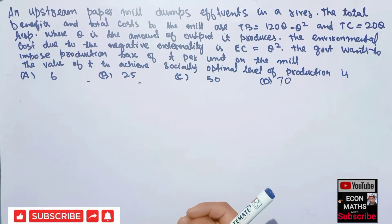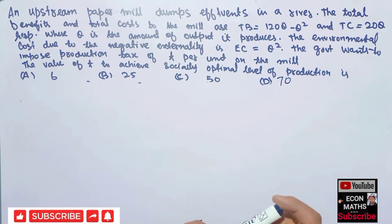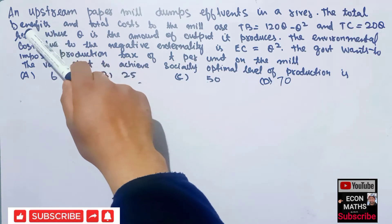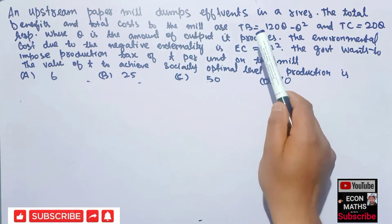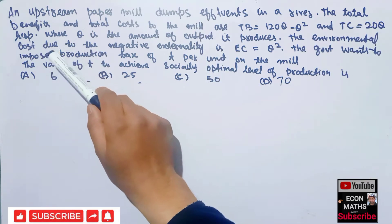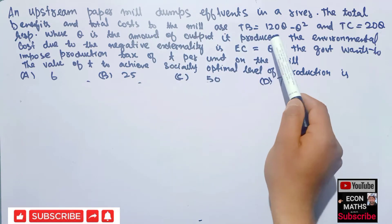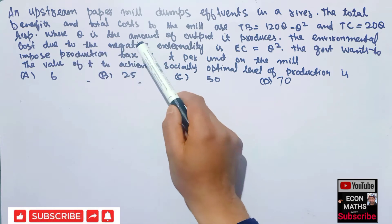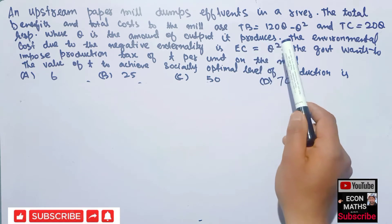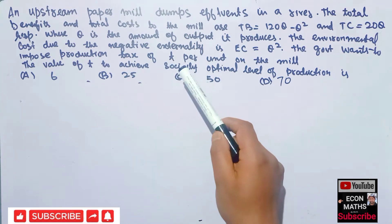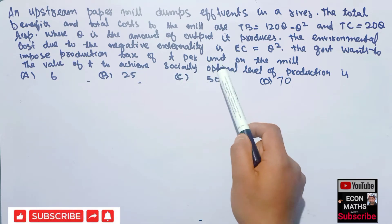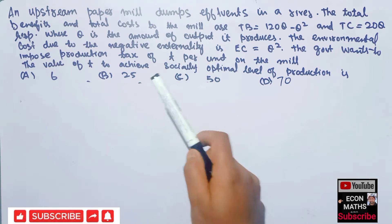In this video we will try to solve a numerical that was asked in the GATE Economics paper of 2021. The question is: an upstream paper mill dumps effluents in a river. The total benefits and total costs to the mill are: total benefit is given as 120q minus q squared, and total costs are given as 20q, where q is the amount of output it produces. The environmental cost due to the negative externality is given as q squared. The government wants to impose a production tax of t per unit on the mill. The value of t to achieve the socially optimal level of production is — the options are 6, 25, 50, and 70.